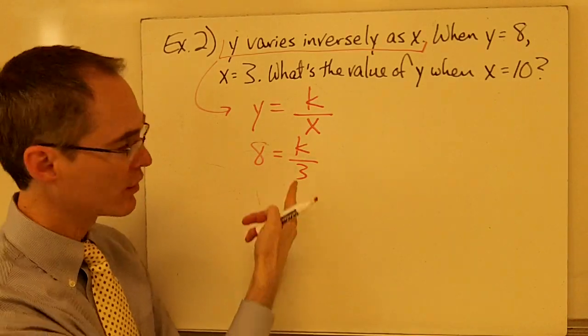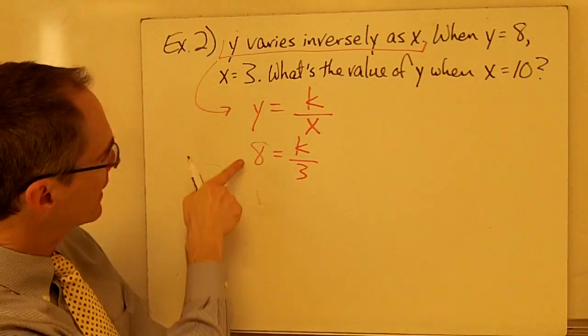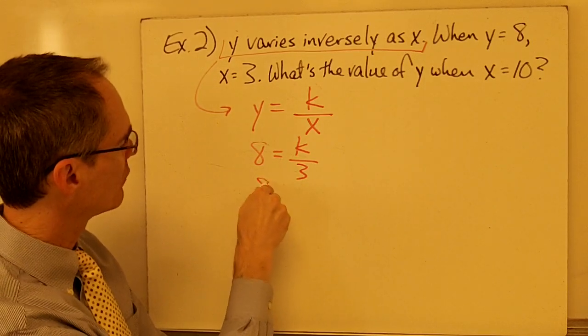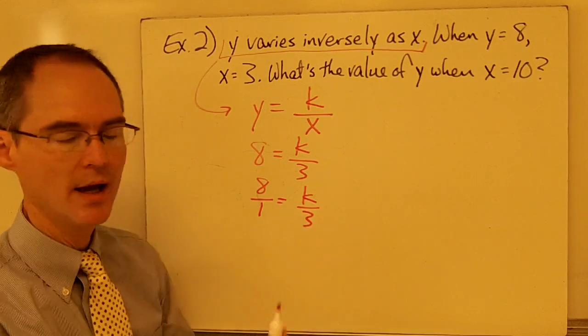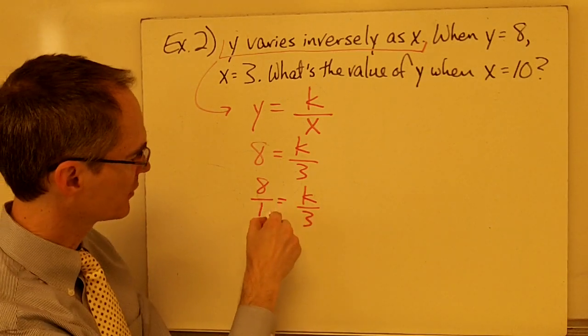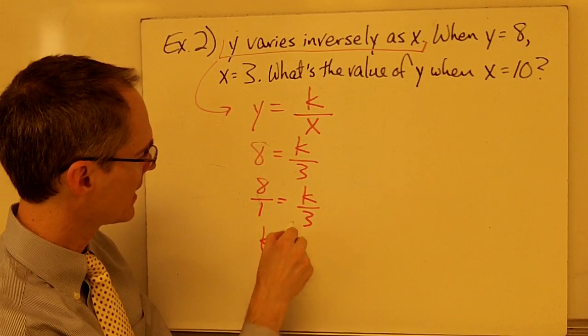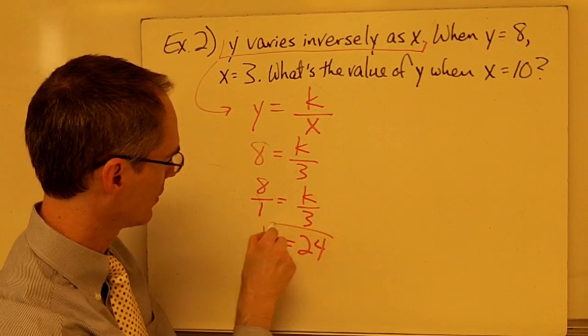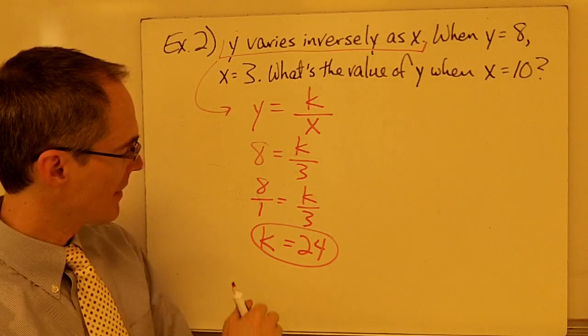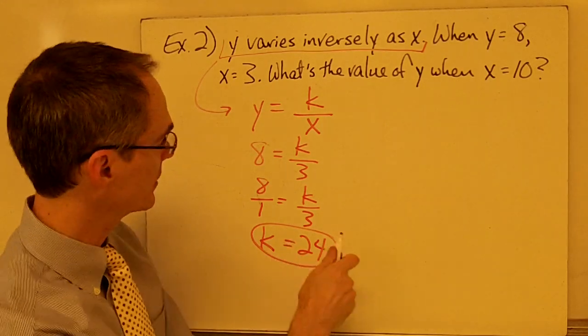And now, again, I have an equation that I can use to solve for k. If I write 8 as 8 over 1, then I have 8 over 1 equals k over 3. I've got a proportion. I can cross multiply. 1 times k is k equals 3 times 8, which is 24.